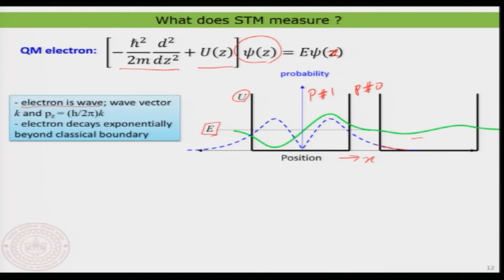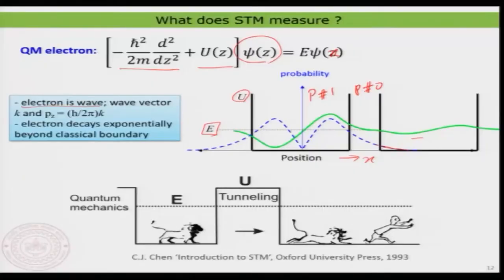The same electron is present at a lower probability in the other box and with higher probability in this box. The interesting thing is that the electron penetrated through the classically forbidden boundary. Now the life of the person standing outside the barrier is actually very bad — the quantum mechanical lion is acquiring a certain probability to also be outside. Thanks to the classical world we live in; in a quantum mechanical world you could never safely visit a zoo.